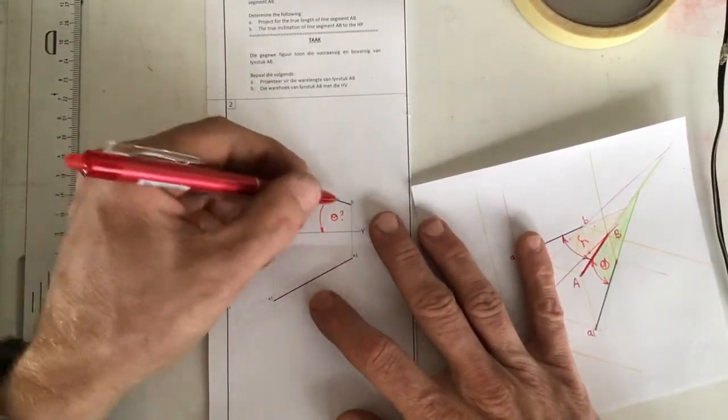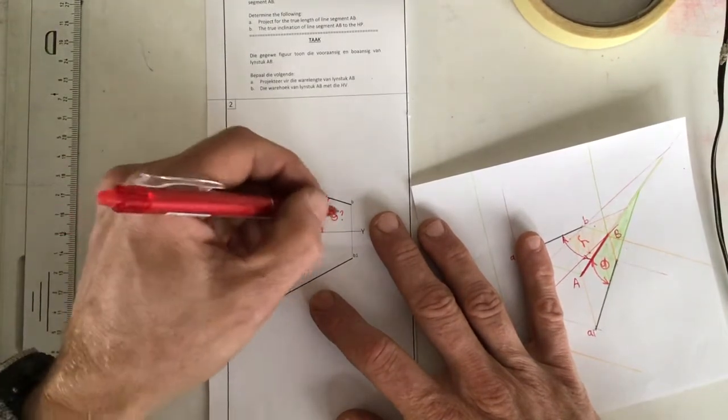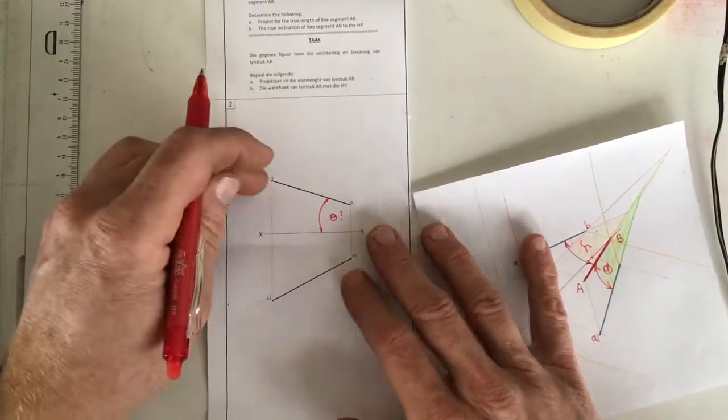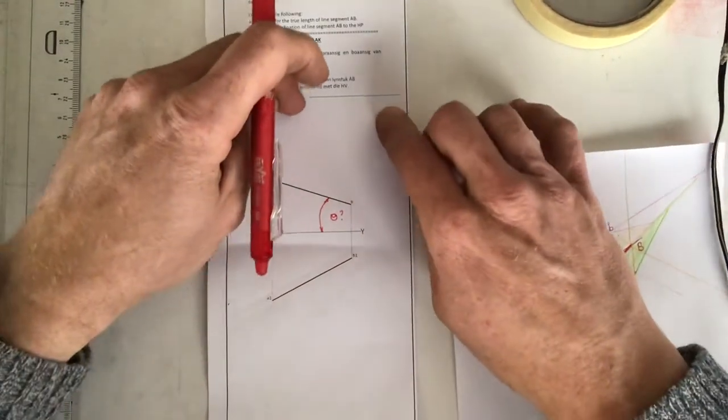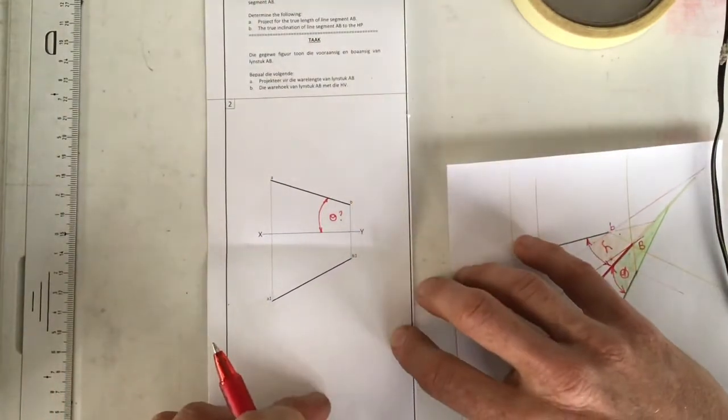Why? Because I don't have a true length over here. So I need to be able to see a true length in order to get the true angle. Now, I can project in that direction to get a true length, and I can project in that direction to get a true length.